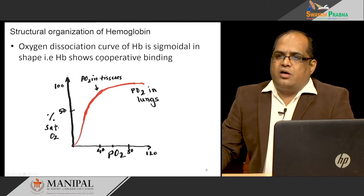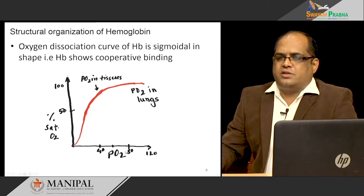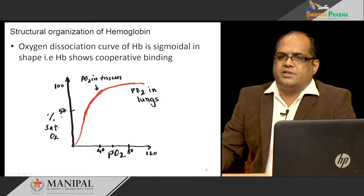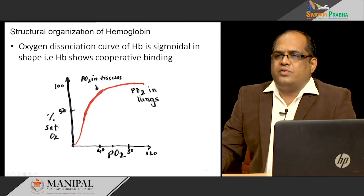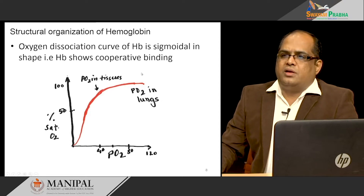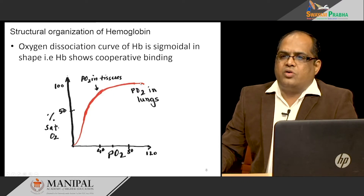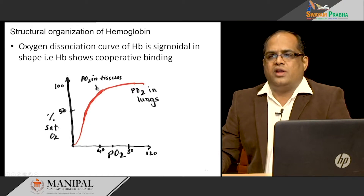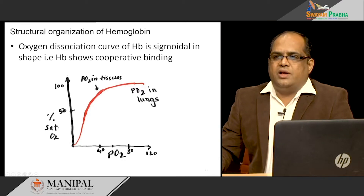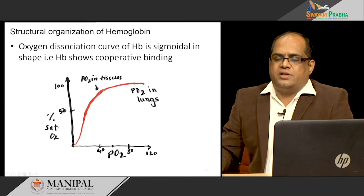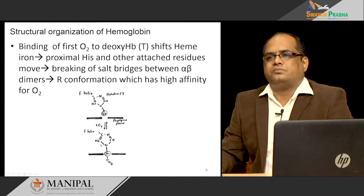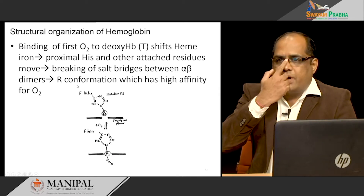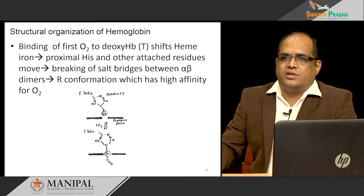When you look at the oxygen dissociation curve, the x-axis shows partial pressure of oxygen and the y-axis shows percent saturation of oxygen. At 100 mmHg pO2, at the level of the lungs, almost all hemoglobin is 100 percent saturated. When pO2 drops to around 40 at the tissue level, it releases oxygen to the tissues. So hemoglobin is fully bound in the lungs and releases oxygen to the tissues as partial pressure decreases.